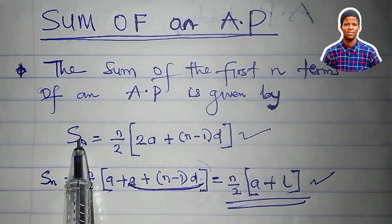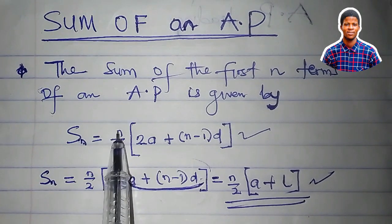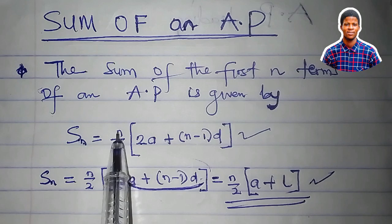S_n is the sum of n terms, or the sum of the first n terms. n is the number of terms. This must not be confused with the nth term formula.